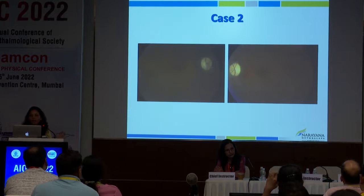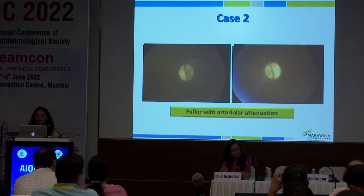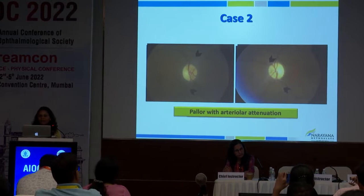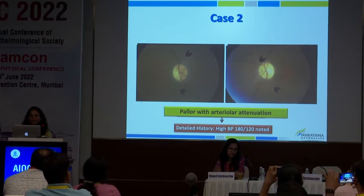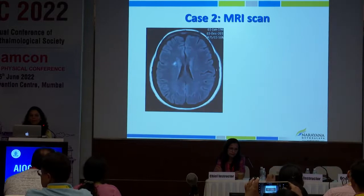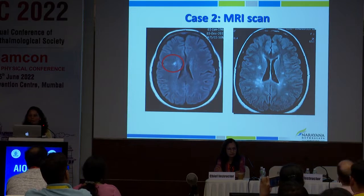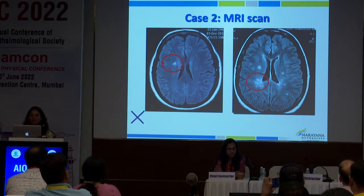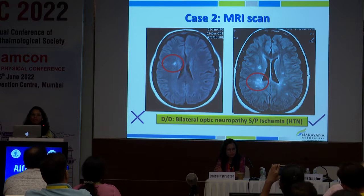In case two, there was total disc pallor with important arterial attenuation — which should not be missed. Arterial attenuation directs you to look for ischemic causes; BP in the OPD was 180/120. The single periventricular lesion was a lacunar infarct — unlikely to be MS, which requires multiple ovoid lesions perpendicular to the periventricular area. The actual diagnosis was bilateral ischemic optic neuropathy, and the patient needed treatment for hypertension, not IVMP for optic neuritis.